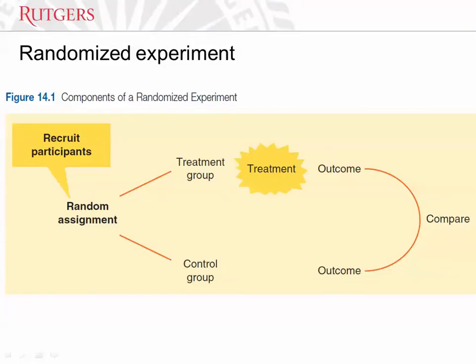This is Figure 14.1 from the book, showing the components of a randomized experiment — the most basic parts of it. Each experimental study can have different additional parts, but these are the basic components. Let's walk through them for this study in particular. This study had to recruit participants. It did that online, reaching out to several thousand people, but only a few hundred agreed to participate. It's not a probability sample — it's a kind of voluntary sample, which is true of a lot of experiments.